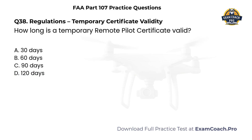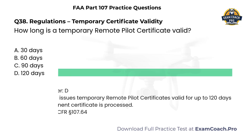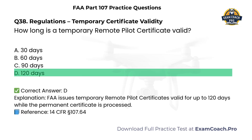Temporary Certificate Validity. How long is a temporary remote pilot certificate valid? A. 30 days. B. 60 days. C. 90 days. D. 120 days. Correct answer: D. 120 days. The FAA issues temporary remote pilot certificates valid for up to 120 days while the permanent certificate is processed.